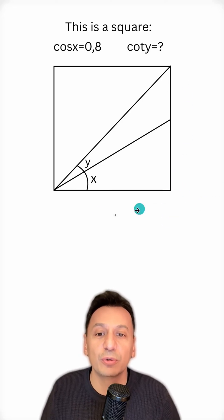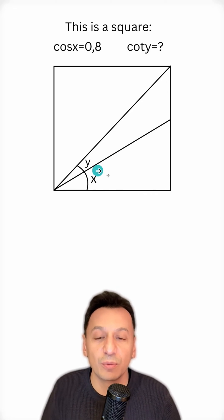In the question, we are given a square and the cosine value of x, and we are asked for the cotangent value of y.